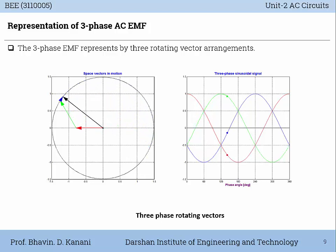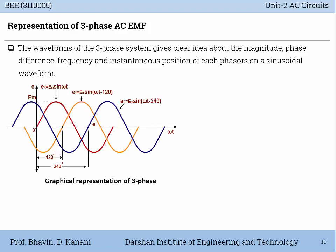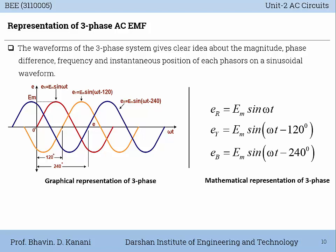The three-phase EMF is represented by three rotating vector arrangements, also called space vectors. The waveform of the three-phase system gives a clear idea about the magnitude, phase difference, frequency, and instantaneous position of each phasor on the sinusoidal waveform. The graph on the left represents three phases graphically, and the right-hand side shows the equivalent mathematical representation. The first equation is: eR = Em sin(ωt) for the R phase. The second is: eY = Em sin(ωt − 120°).